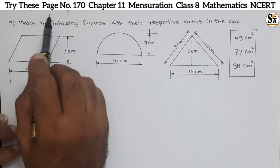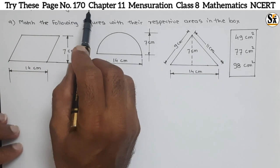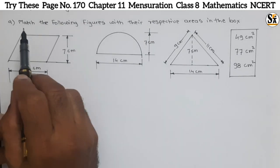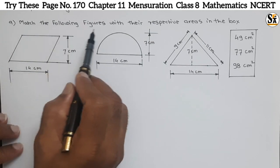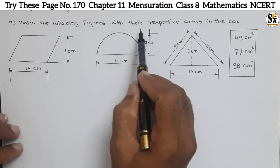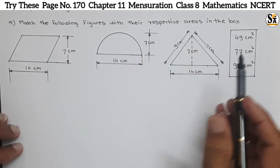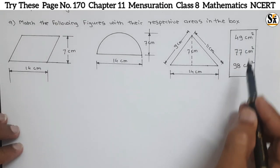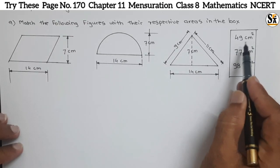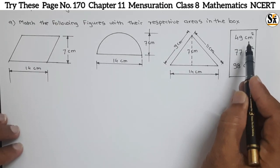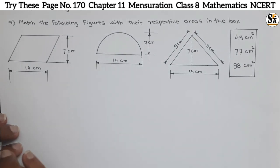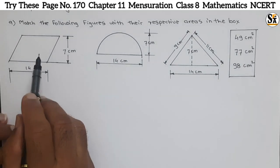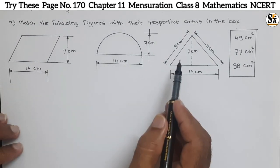See the question under the 'Try This' section, page number 170, chapter Mensuration. The question is: match the following figures with their respective areas in the box. These figures are given, and in the box the areas are given. We have to match them — that means we need to calculate the area of each figure.